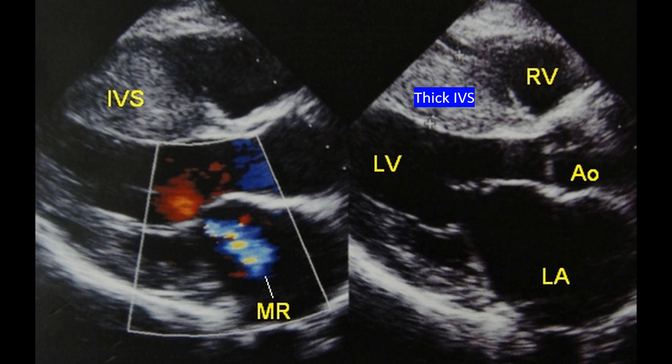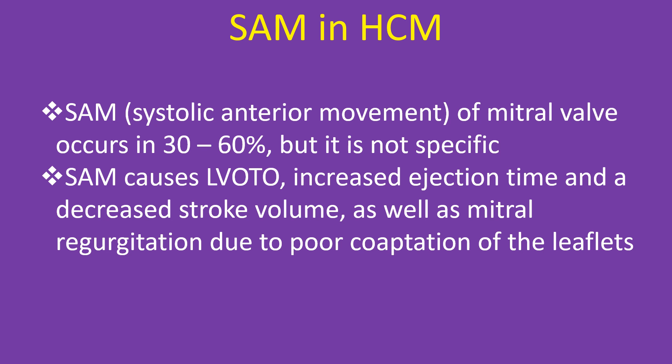Echocardiogram showing thickened intraventricular septum and mitral regurgitation in HCM. Systolic anterior movement (SAM) of the mitral valve occurs in 30 to 60% of cases, but it is not specific. SAM causes LVOTO, increased ejection time, decreased stroke volume, and mitral regurgitation due to poor coaptation of the leaflets.